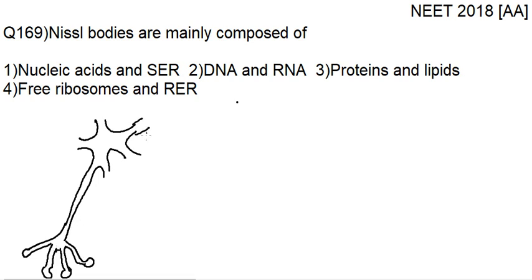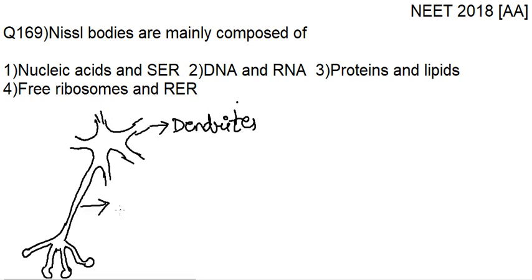These small projections that are coming out are nothing but the dendrites. These help in passing the information or the message from one neuron to the other. This long projection is the axon. And you have the cell body here, and the cell body or the nucleus — soma — this is the nucleus.